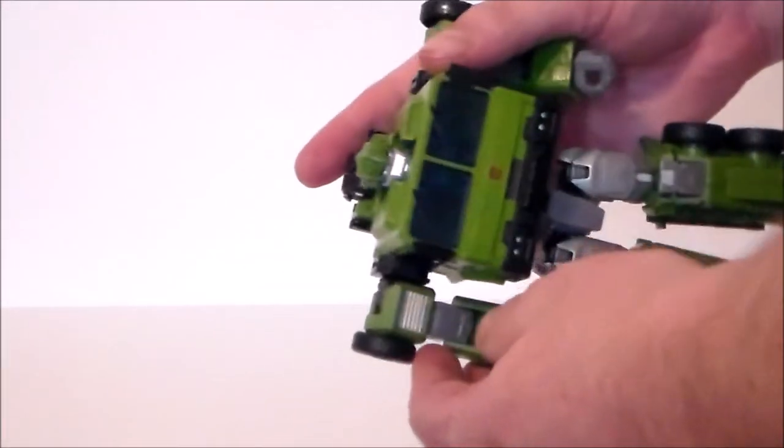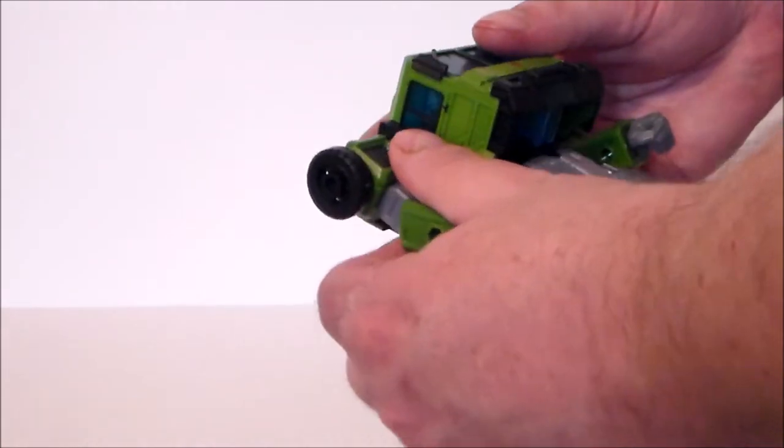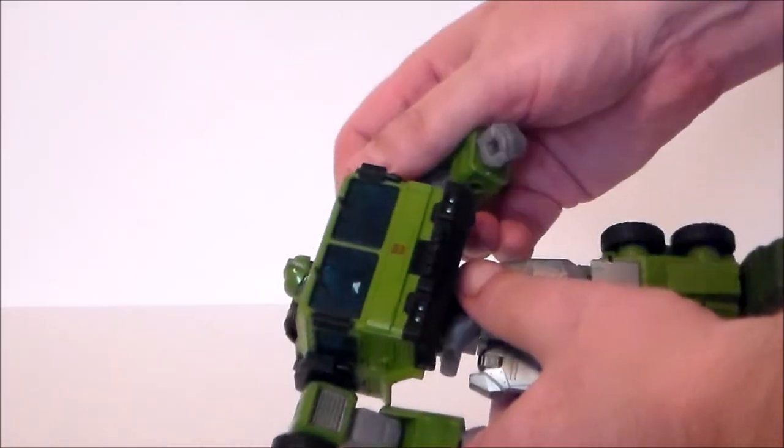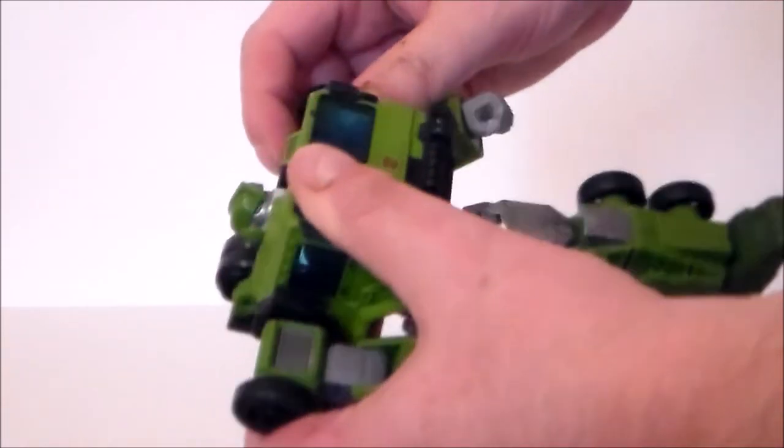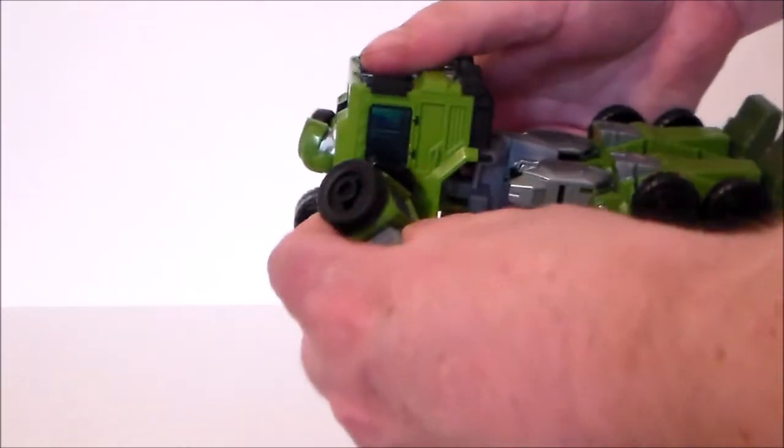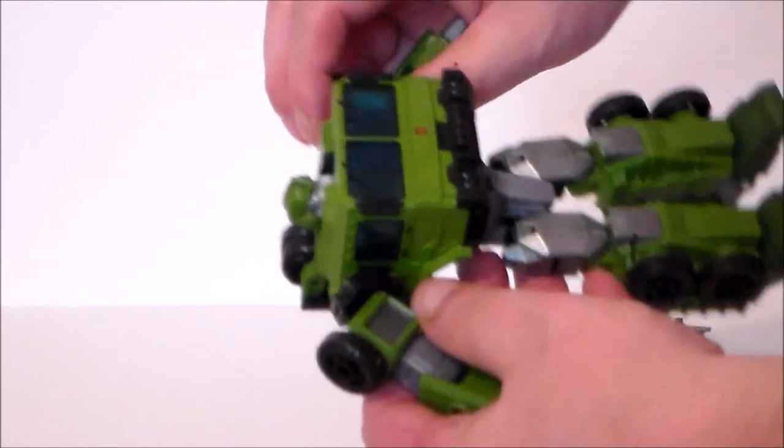Let's go ahead and get started here. So the first thing that you want to do is disconnect the shoulder pieces from the chest, so you're just going to loosen them up and kind of move the arms out of the way a little bit.